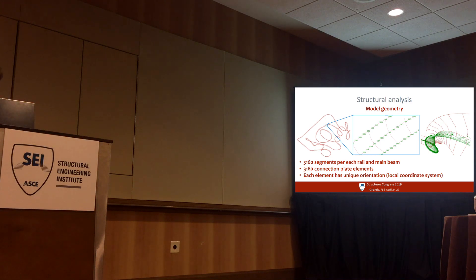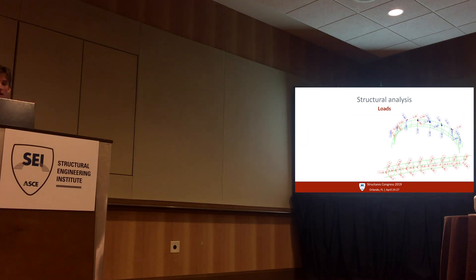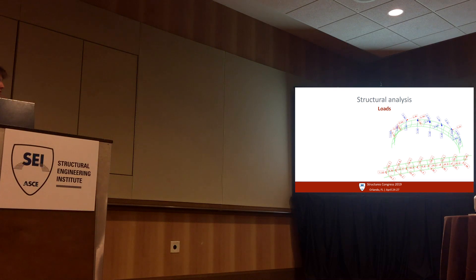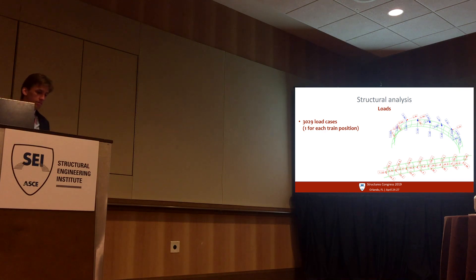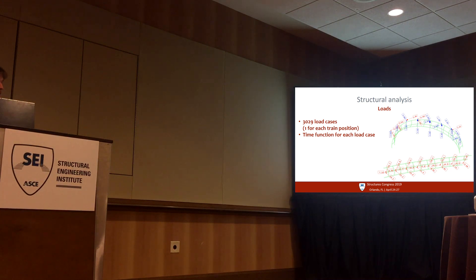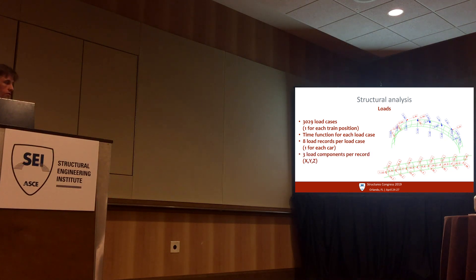But this is not even the worst thing yet. The situation with loads is really bad — you can call it a structural engineer's nightmare. There are 3,000 load cases corresponding to each of the train positions, a time function for each load case for time history analysis, and 8 loads per load case — one for each car — and each load has 3 load components. This brings us to 73,000 unique load values.